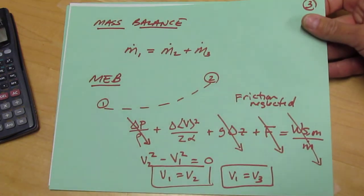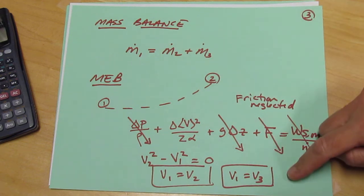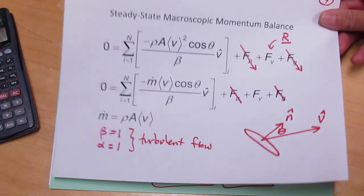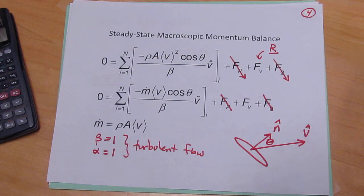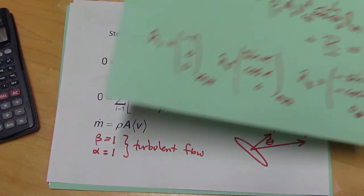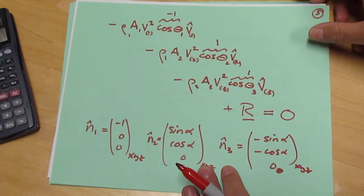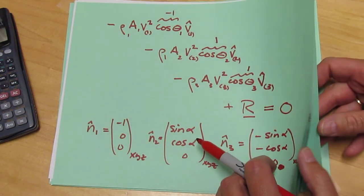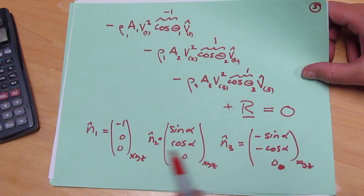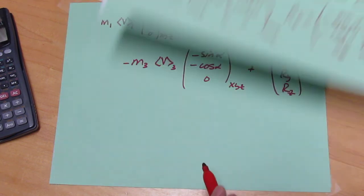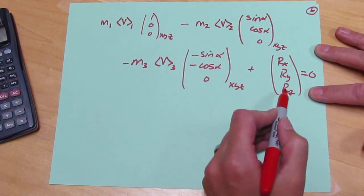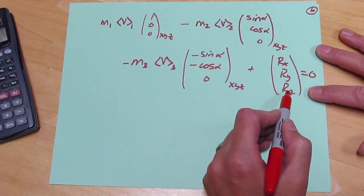We performed a mass balance and a mechanical energy balance, which let us know that the velocity was the same in every stream. And now we're working on the macroscopic momentum balance equation. We've written it this far and noted the definitions of the various terms. This is where we've arrived, where we've written these three convective terms and the force on the wall, which we're trying to calculate.